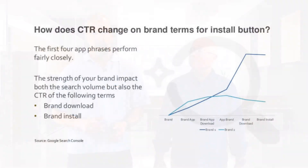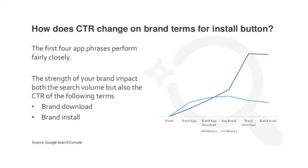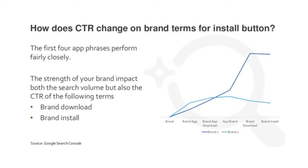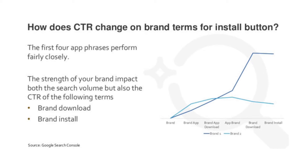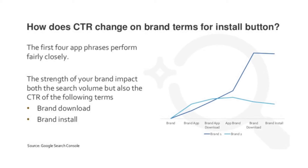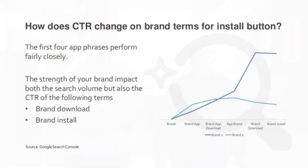And now one more interesting tidbit from David Ivanow before we end. He noted that click-through rate on app install buttons is highest for branded searches, as you can see in his chart showing click-through rates for two different brands. When the search query includes both the brand name and the word app, the CTR is pretty much the same. But once you remove the word app, the number of people who will click on an app install button depends greatly on the strength of your brand.